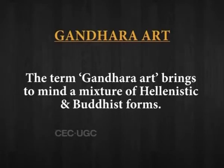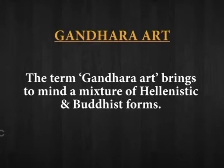Gandhara art brings to mind a mixture of Hellenistic and Buddhist forms. This art developed from the 4th century BC under the Parthians and the Kushana rulers, and continued until the 5th century AD when much of Gandhara was invaded by the Huns. Swat, Bajaur, and Peshawar valleys came under foreign influence, the earliest being the Achaemenid empire of Persia, and were later occupied by Alexander's army.